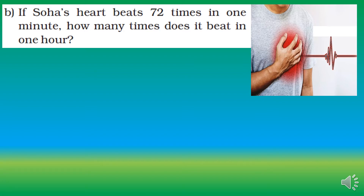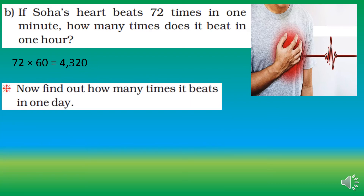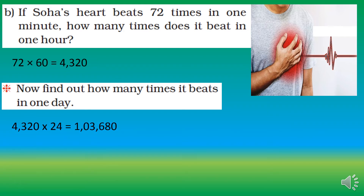Heartbeats problem: Soha's heart beats 72 times in one minute. How many times does it beat in one hour? That equals 72 multiplied by 60, since there are 60 minutes in one hour, giving 4320. So Soha's heart beats 4320 times in one hour. Now find out how many times it beats in one day — there are 24 hours, so 4320 multiplied by 24 equals 103,680 times.